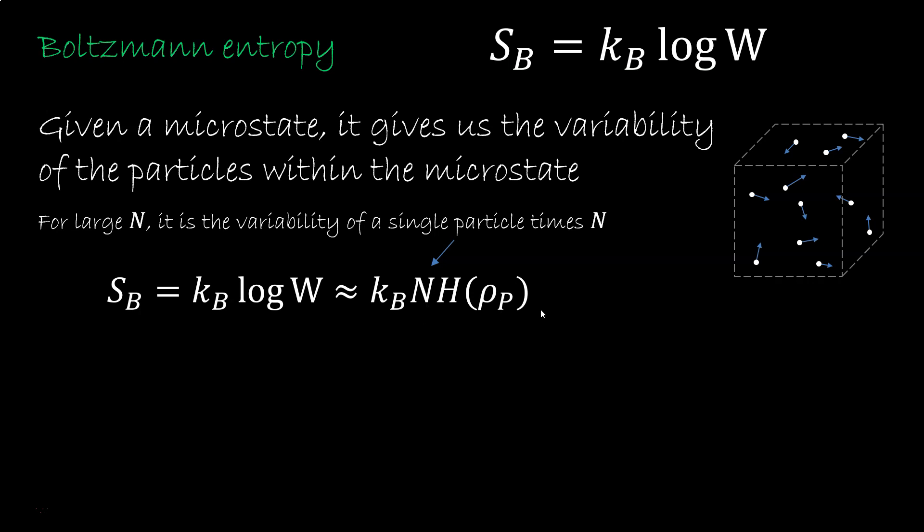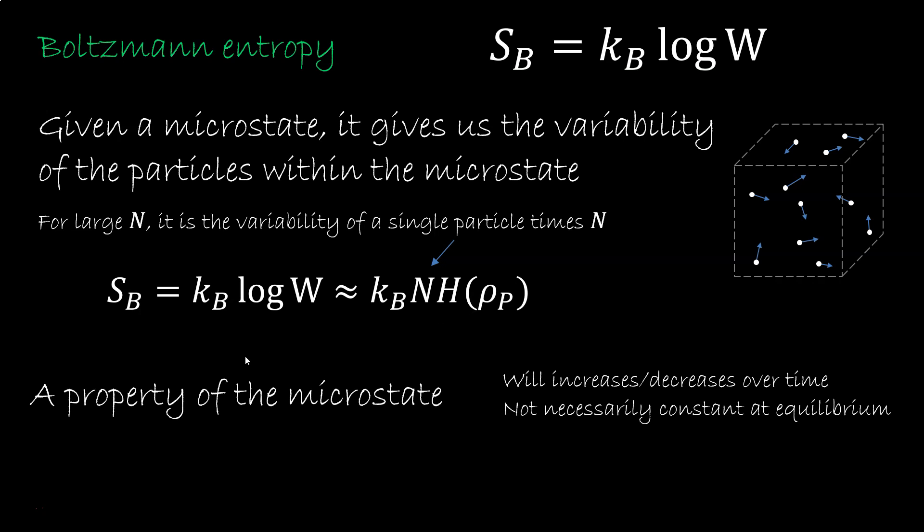So the Boltzmann entropy is technically not the variability of a single particle within the microstate, but the variability of all the particles. That is why it's connected to the permutation. The more permutations, the more the particles can be switched around. The important thing to understand is that the Boltzmann entropy is a property of the microstate. It can go up and down as the microstate changes, so it does not correspond to a thermodynamic entropy, which is a property of the macrostate. The Boltzmann entropy will fluctuate at equilibrium, so it won't be constant. The microstate with the highest Boltzmann entropy will typically be the most likely one, so you can think of the system fluctuating around it.